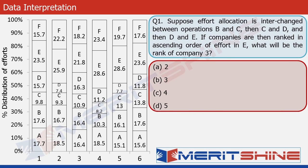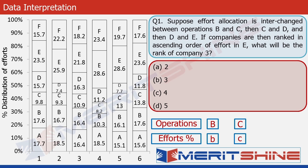There is a condition given here. The effort allocation is to be interchanged between B and C, then C and D, and then finally D and E. After doing this exercise, we have to arrange the companies in ascending order of effort in E and find the rank of company 3. Let's first do the arrangement part. Look at this graphic here. Let's denote the operations by capital letters and the effort involved in them by small letters. For example, to start with, the effort required for conducting operation B is represented as small b, and for C as small c.